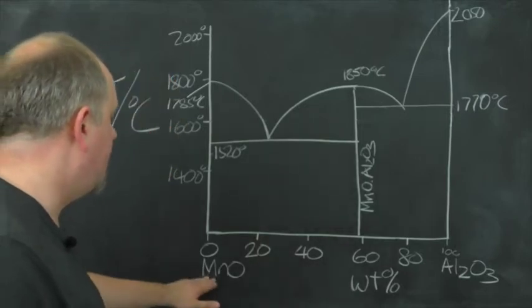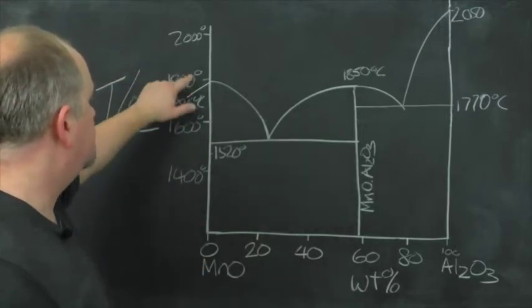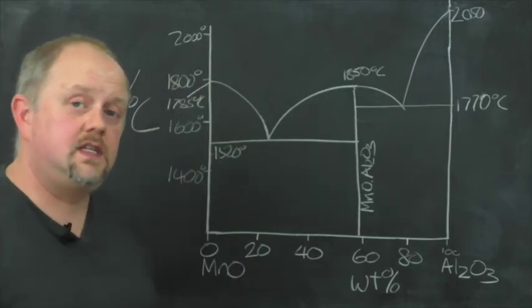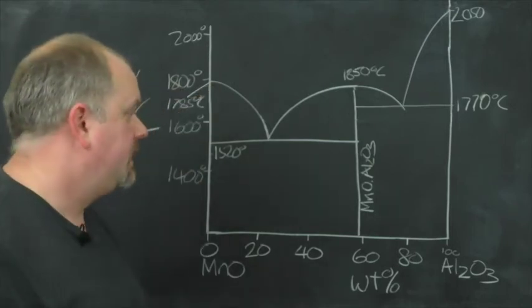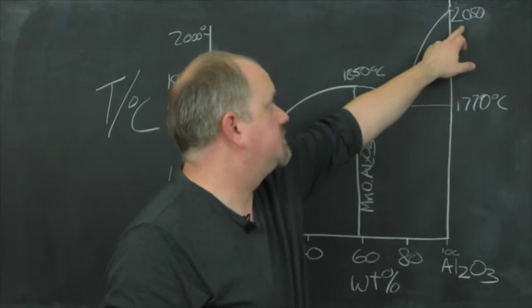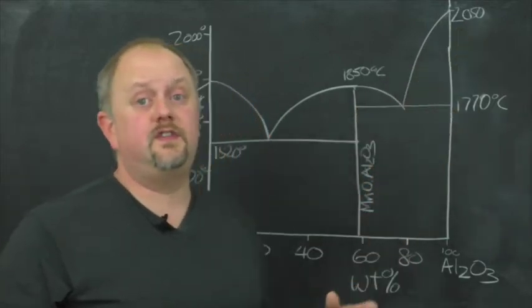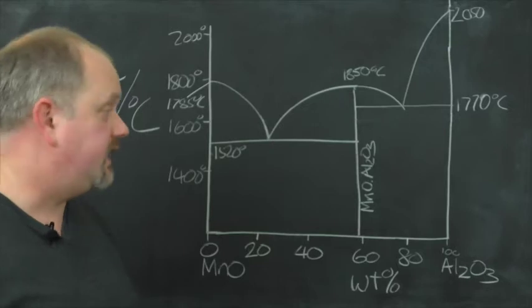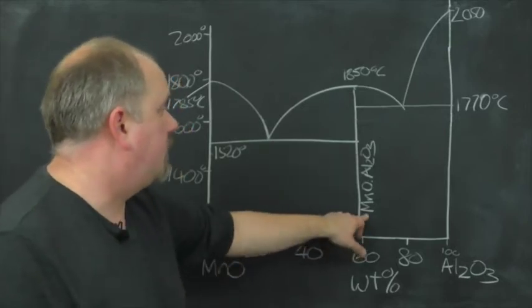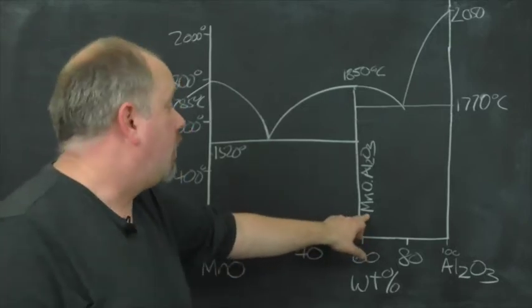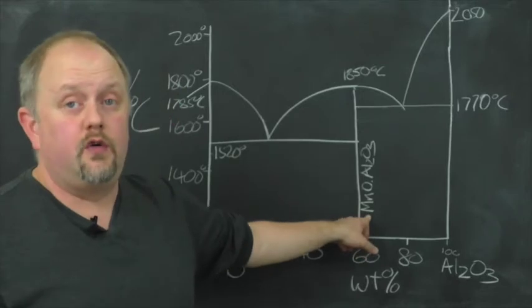So we have our two components, MnO, which melts here at 1785 degrees C, and Al2O3, which melts up here at 2050 degrees C. We have one intermediate phase, which is this MnO-Al2O3 phase, or MnO-Al2O4.